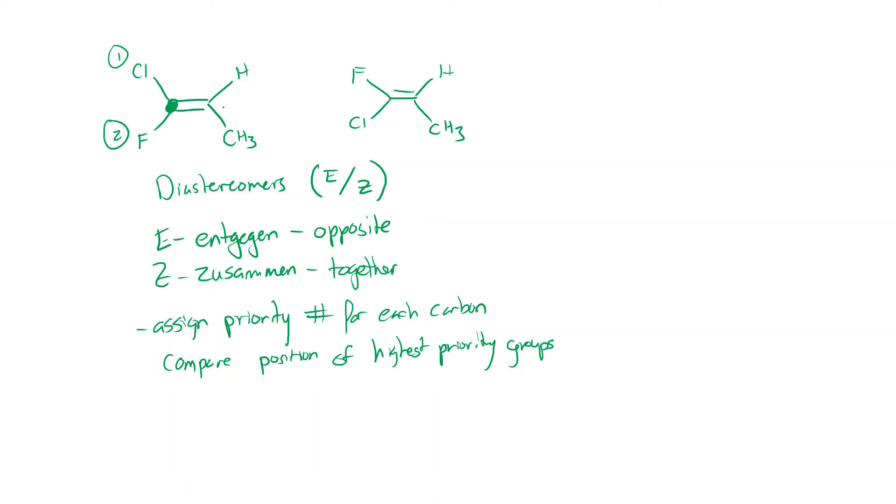So we just look at these two groups over here. And then we drop all of that. We switch to the other carbon and we say, all right, over here, what's the highest priority group? Methyl group versus hydrogen. Methyl is higher. Hydrogen is lower. Now we circle our highest priority groups. We've got a methyl group here. We've got a chlorine over here. So the highest priority groups are opposite each other. So that means this is an E-alkene. So the name for this one would be E-1-chloro-1-fluoropropene.